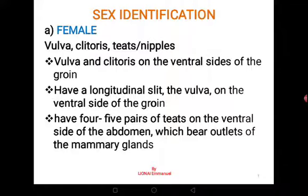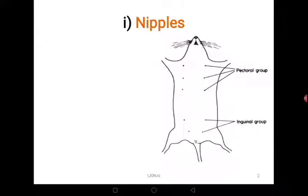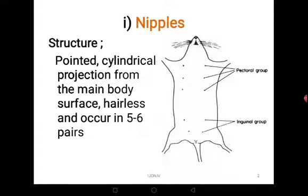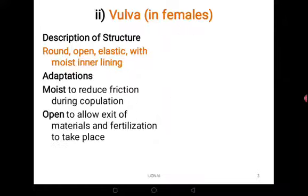These are where milk passes during breastfeeding. You can see the pectoral group of nipples and the inguino group. The pectoral nipples are on the thoracic side, and the inguino nipples are towards the groin region. When you look at them critically, they are pointed, cylindrical, and projected from the main body surface. They do not have hair on them, and there are either four, five, or six pairs depending on the animal.